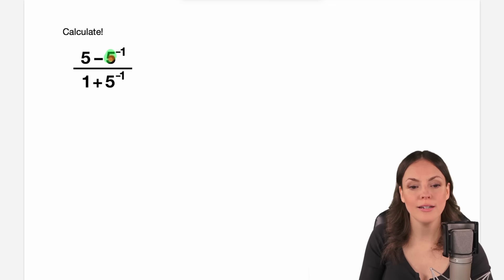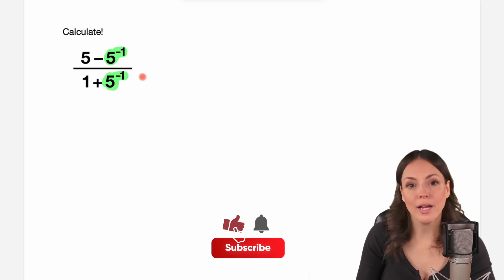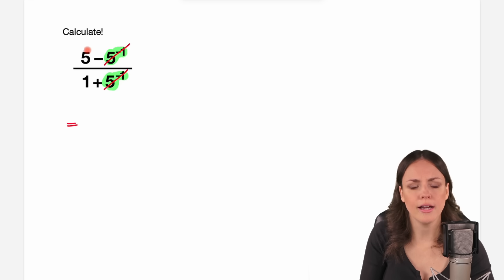So this 5 to the power of negative 1 is here and here and some of you might say, hey, this is a fraction, I can reduce fractions so I just cancel this thing out and then I have 5 over 1 which just equals 5 and I am done.